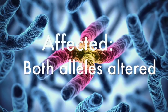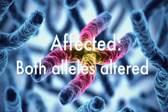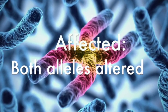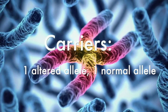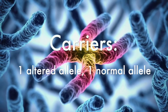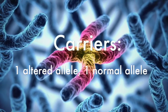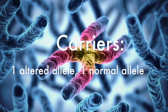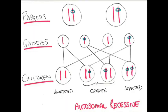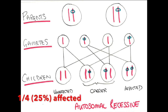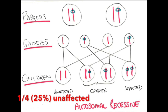In autosomal recessive inheritance, both alleles for a gene must be altered for an individual to manifest the condition. Carriers of autosomal recessive conditions only have one mutated allele, and in the clear majority of carriers they have no clinical features of the disorder. When two carriers have children together, they each have a 50-50 risk of passing on their normal or mutated copy. Two carriers of a recessive condition have a one in four, or 25%, risk of having an affected child. The chance of the child having no mutated alleles is also one in four.